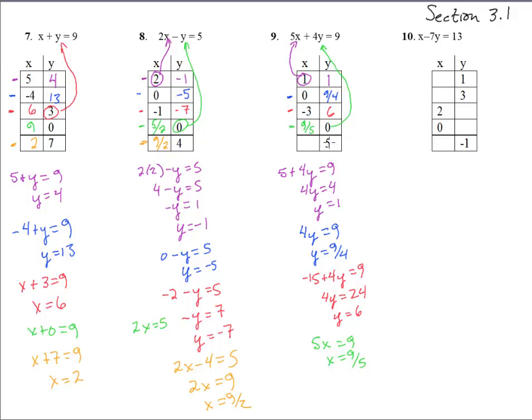And then the last one, stick in a 5 for y. I better write this one all out. 5x plus 4 times 5 is 20 equals 9. Subtract 20 from both sides and we get 5x equals negative 11.